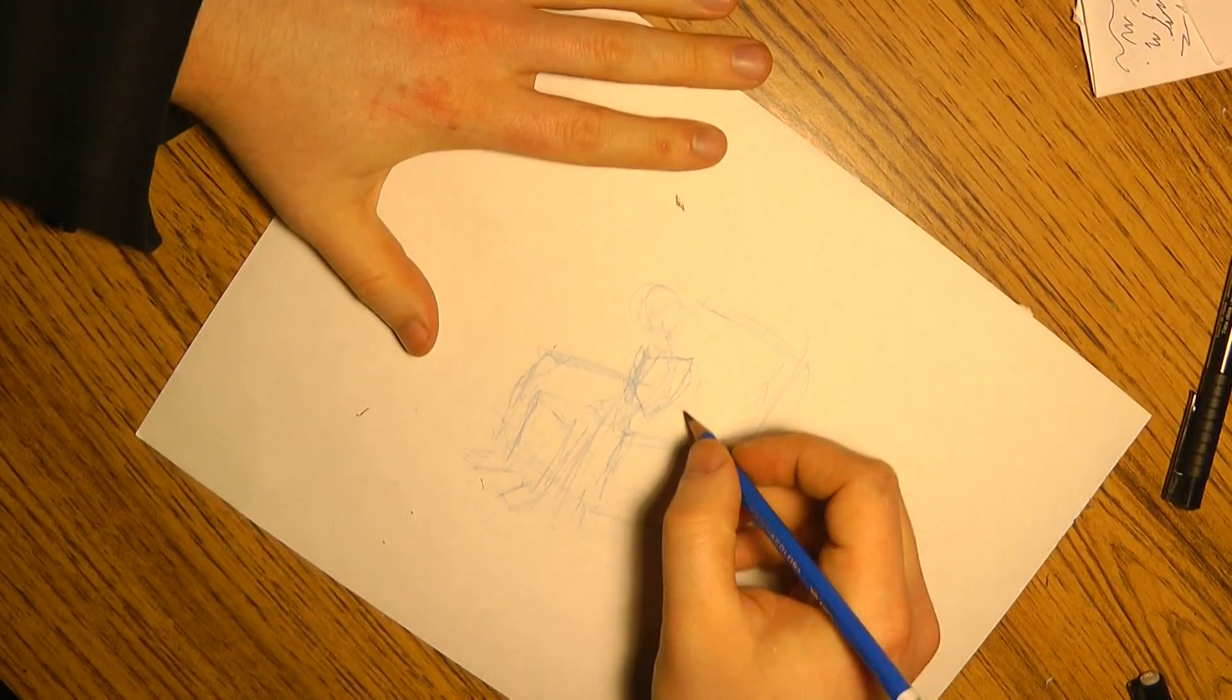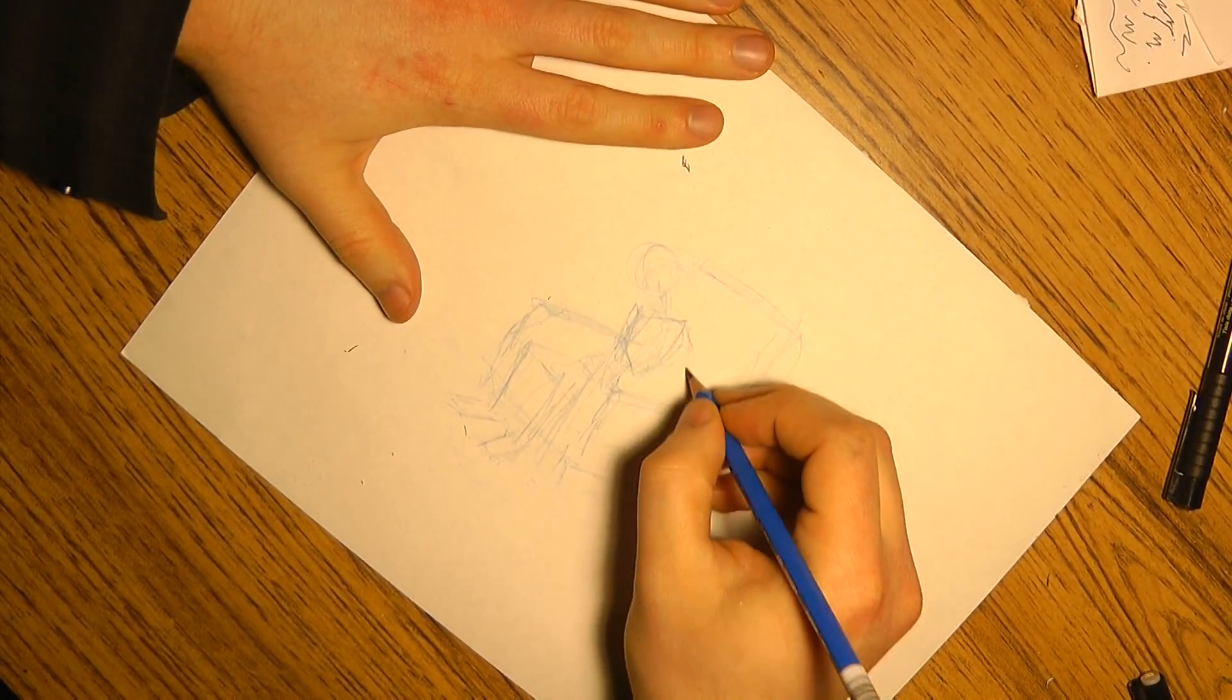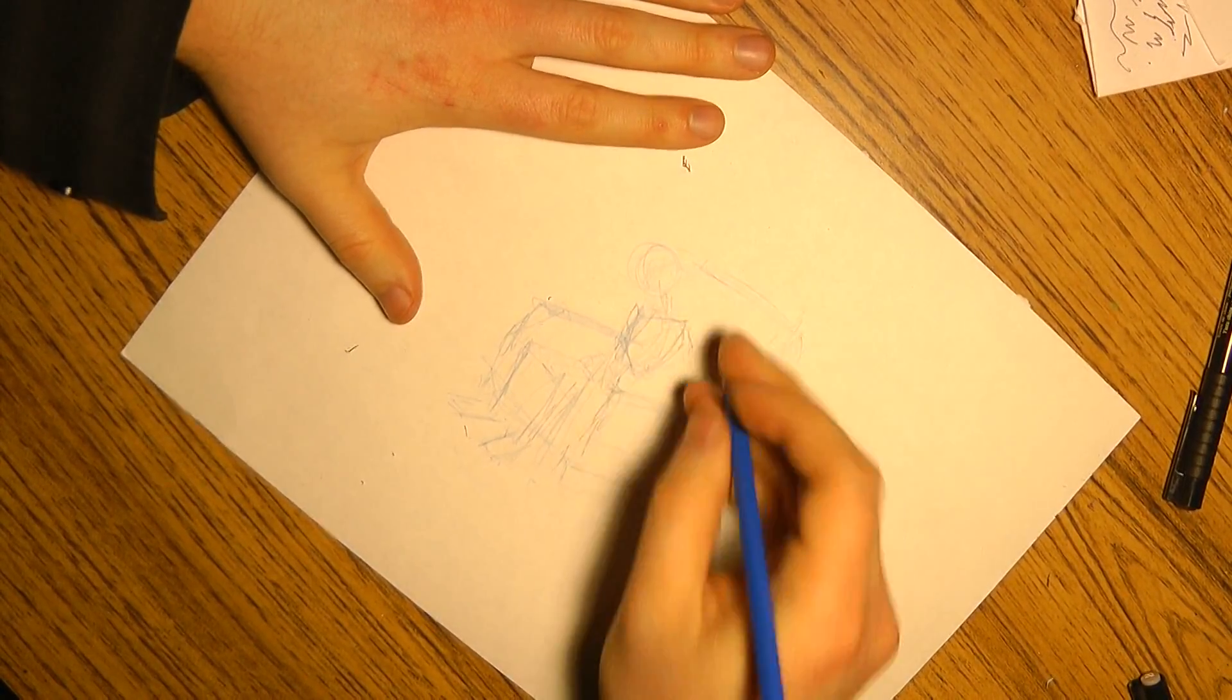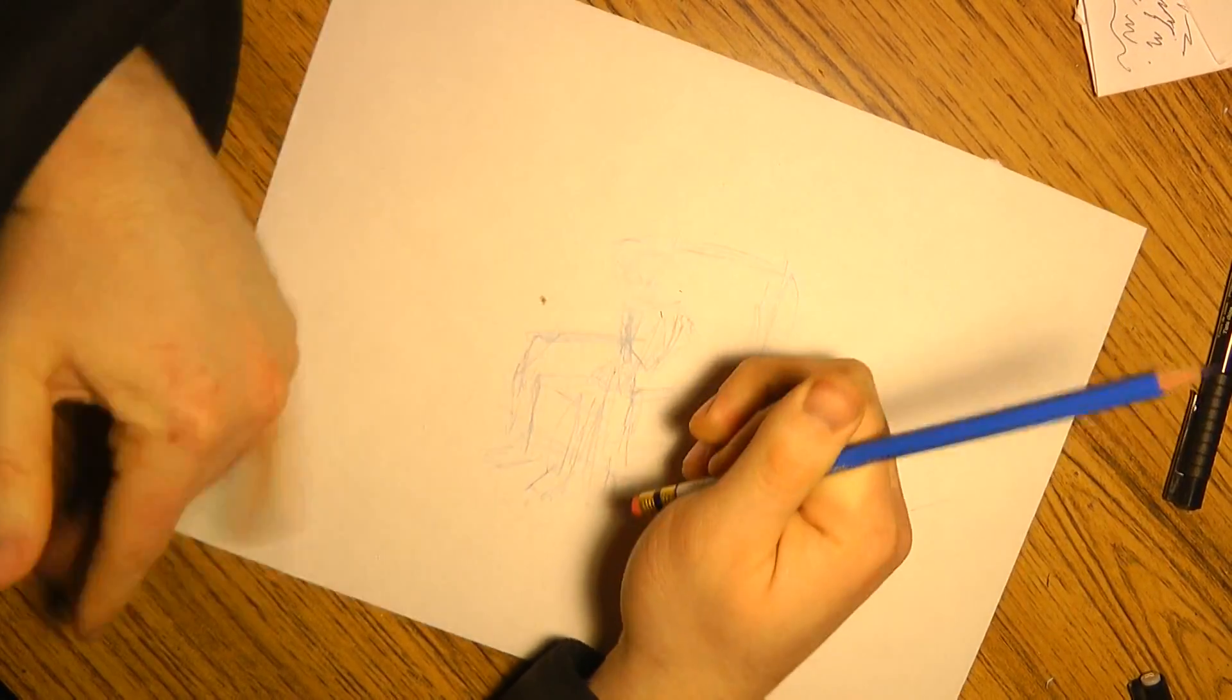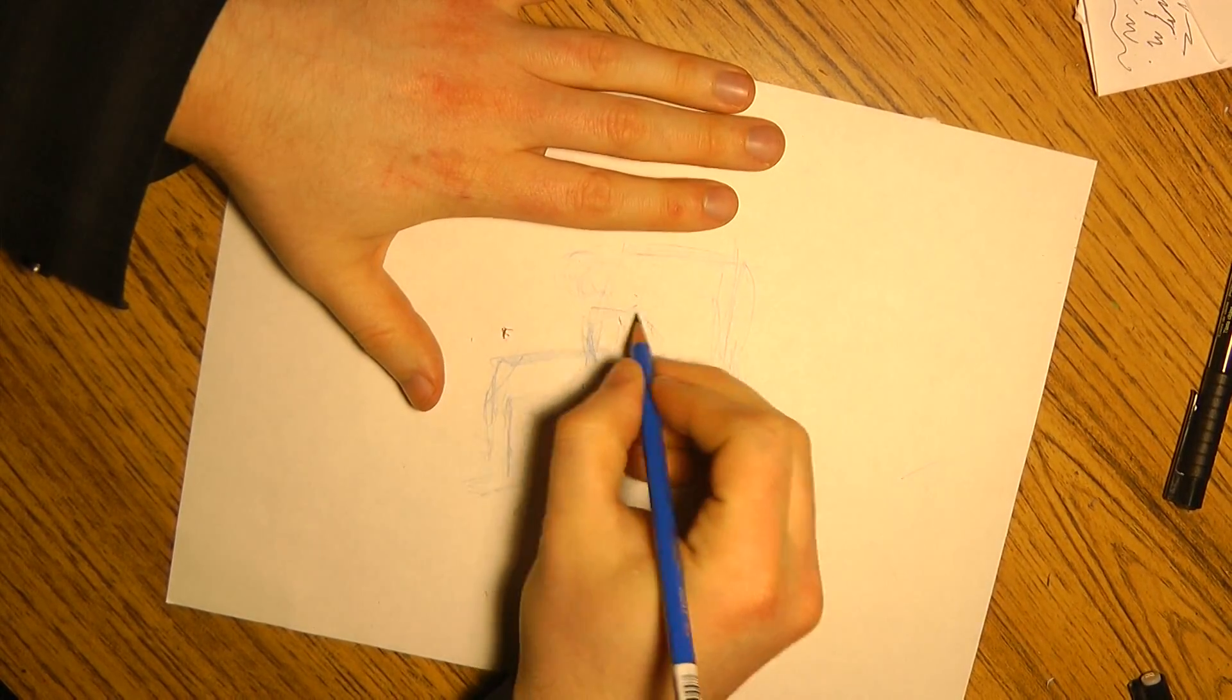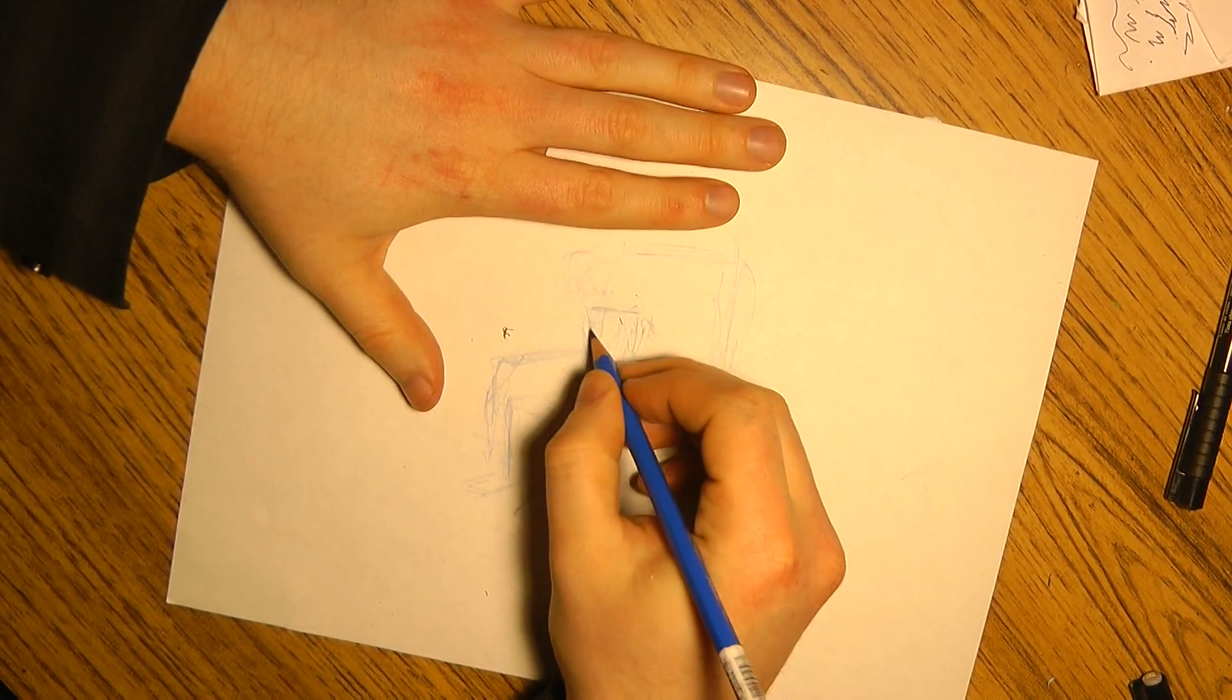Anyway. Getting kind of a slouching thing from him. Actually, this looks too much like he's listing to one side. I want to make sure that he's kind of symmetrical.